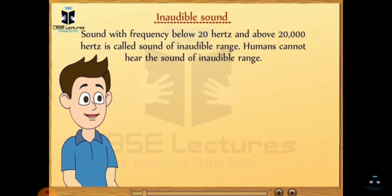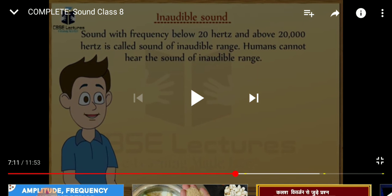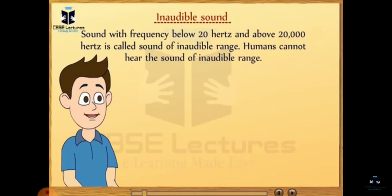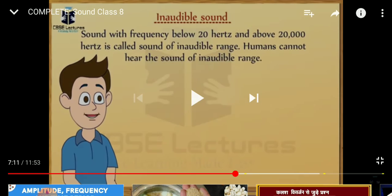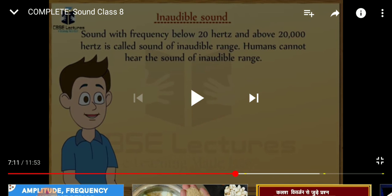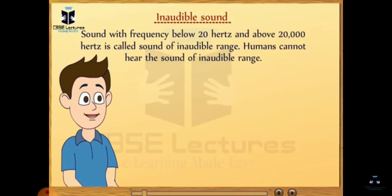Ultrasonic sounds have frequencies higher than 20,000 hertz, and infrasonic sounds have frequencies less than 20 hertz. Some animals such as dogs, leopards, monkeys, and deer can hear ultrasonic sound, while bats can produce ultrasonic sound. For infrasonic sounds, animals such as elephants and birds can hear them. Ultrasonic frequencies find many uses today.